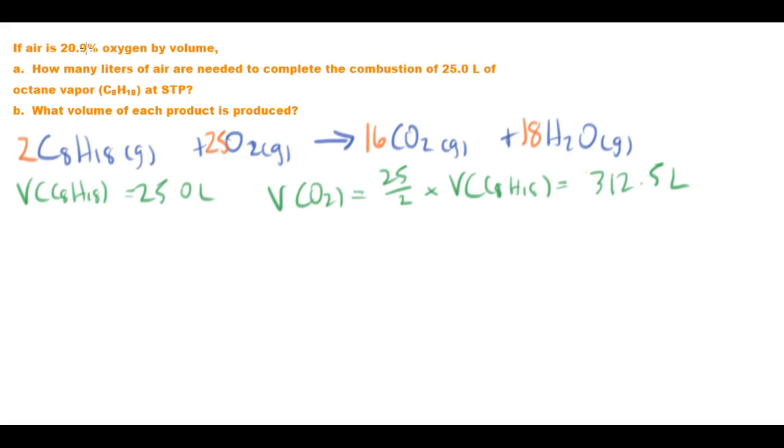Now, if air is about 20.9% oxygen, then what we can do, we can go 312.5 liters divided by the percentage that it is, 20.9%, and multiply that by 100 to get us the full actual volume. Because if 312.5 is 20.9%, what is the full 100%? The full 100% should be around about 1,495 liters.